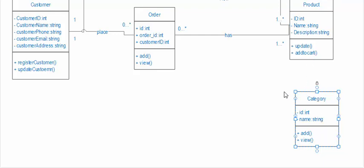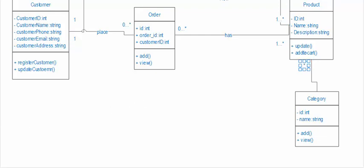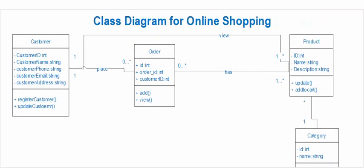Let's drag the category class into position and create the relationship between product and category. In a category there are many products, and a product must belong to exactly one category.